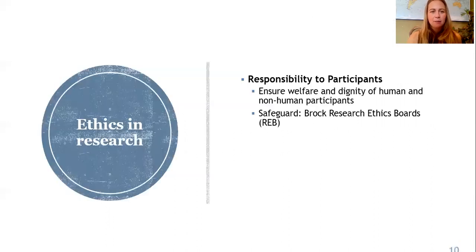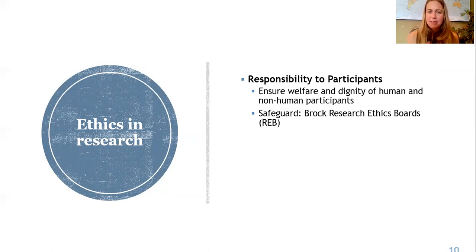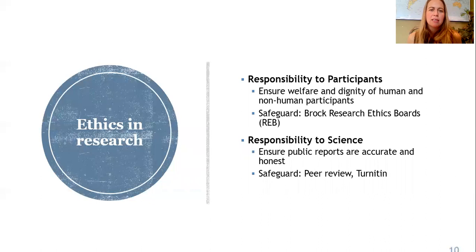All of this fits into two main larger categories. First, responsibility to participants to ensure their welfare and dignity, regardless of whether they're human or non-human — the safeguard for this is a research ethics board. Every institution that allows research has a board of people that reviews all research proposals to ensure participants are treated ethically. Second, responsibility to science to ensure public records are accurate and honest — safeguards include the peer review process and tools like Turnitin to ensure you're using your own words.